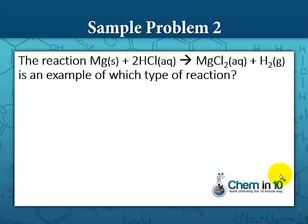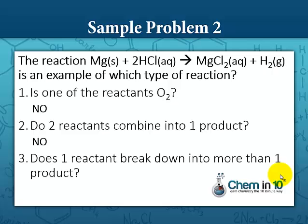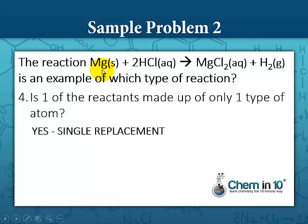Sample problem number two: the reaction magnesium solid plus hydrochloric acid yields magnesium chloride plus hydrogen gas is an example of which type of reaction? Going through our flowchart: neither reactant is oxygen. Do two reactants combine into one product? No, we have two products. Does one reactant break down into more than one product? No, we have two reactants. Is one of the reactants made up of only one type of atom? Yes — it's magnesium. So it's a single replacement reaction. Notice that the magnesium replaces the hydrogen in hydrochloric acid, making magnesium chloride, and the hydrogen goes off by itself as hydrogen gas.